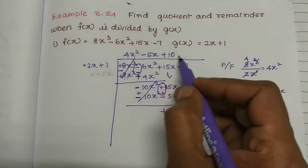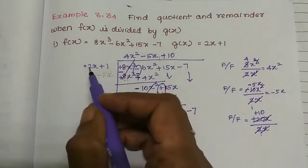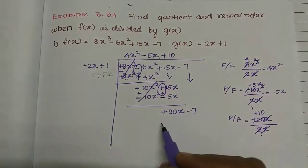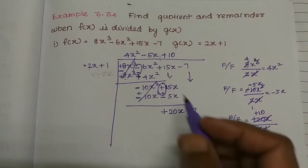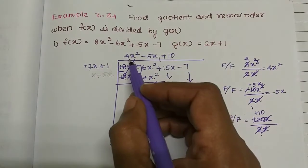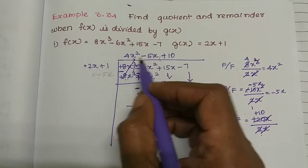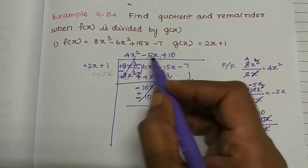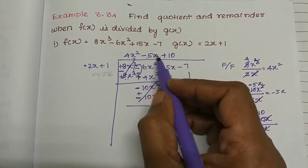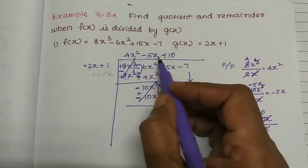Now plus 10 is equal to this term. The quotient so far is 4x squared minus 5x plus 10. This is the standard form arranged result.